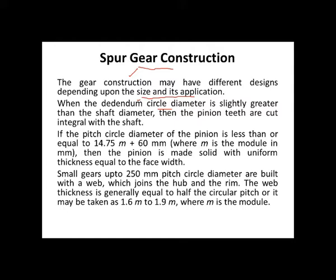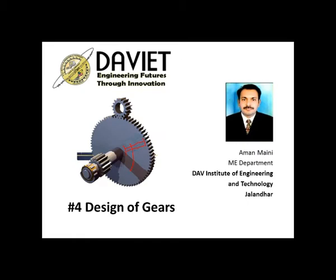When the dedendum circle diameter is slightly greater than the shaft diameter, the pinion teeth will be integral with the shaft — they are cut as an integral part during manufacturing. If the pitch circle diameter is less than or equal to the constraint of 14.75 mm module plus 60 mm, then the pinion is made solid with a uniform thickness of the web equal to the face width.